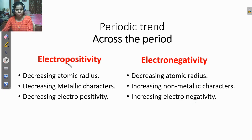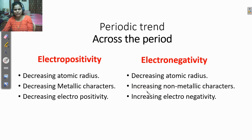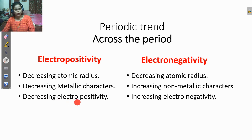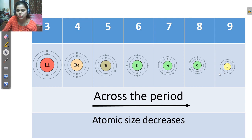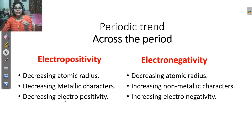What about the electropositivity across the period? The atomic radius decreases, so the metallic character decreases because the non-metallic character increases. That is why electropositivity is opposite to electronegativity — the metallic character decreases and therefore electropositivity also decreases. Why does electropositivity decrease? Because it is very difficult to lose electrons as we go from left to right.